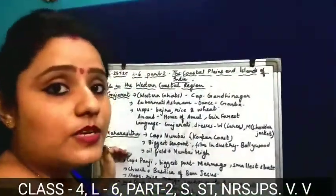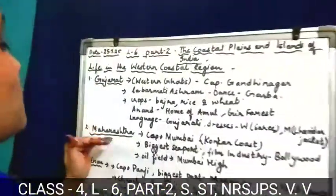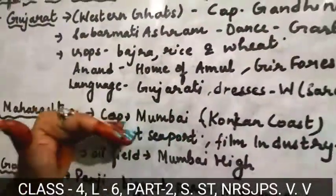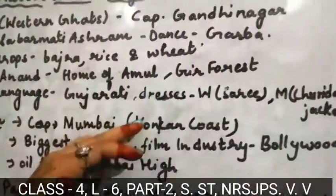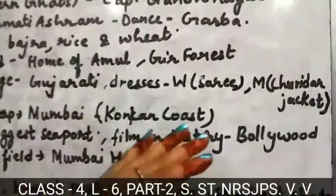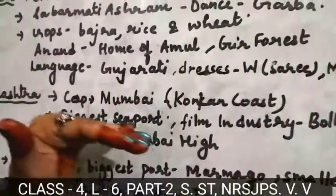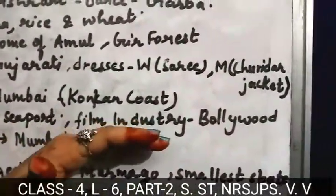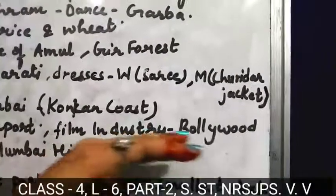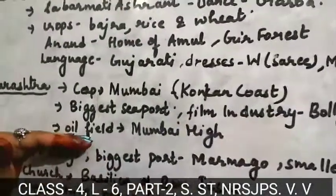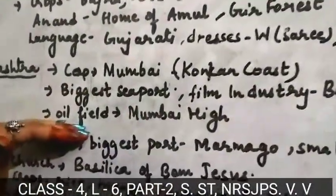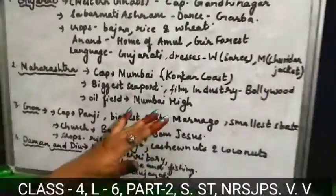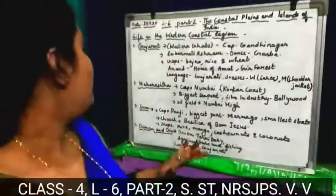The next state is Maharashtra. Mumbai is the capital of Maharashtra. It is located on the Konkan coast and is the biggest seaport. One famous film industry of India is located here — that is Bollywood. Mumbai High is famous for its oil fields.